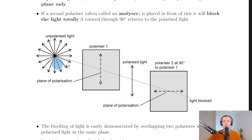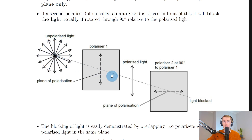In the picture you can see we've got unpolarized light, then our first polarizer, then our second polarizer which we call an analyzer. With the unpolarized light on the left — let's say this was coming from sunlight — it passes through the first polarizer which has a vertical plane of polarization, so this is going to let light pass through in the vertical plane only.